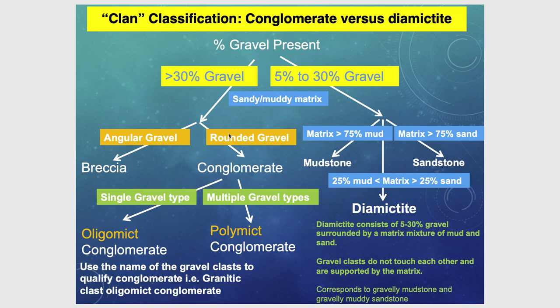A summary diagram guides the decision of assigning a name to relatively coarse aggregates. An important distinction: an oligomictic conglomerate or breccia is composed of a single clast composition, while a polymictic breccia or conglomerate has clasts of different compositions. The same distinction applies to rudites.